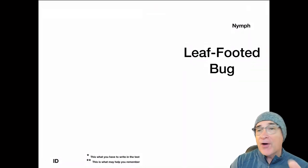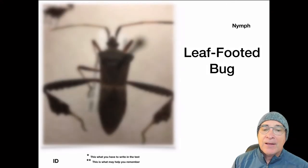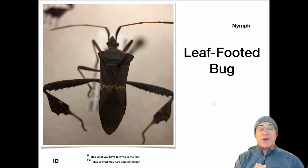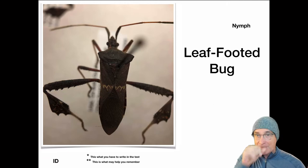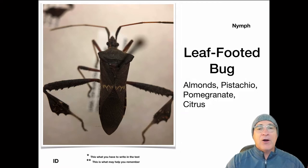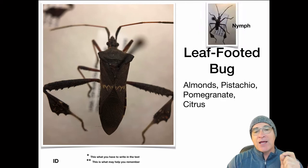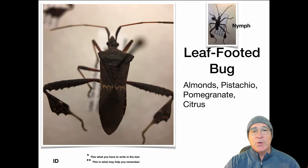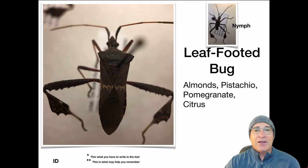This last one — if you can't figure out why it's called the leaf-footed bug, you need to look more carefully. This bug is really slender, kind of dressed up. If you look at the back end of his back legs, they look like leaves — they resemble leaves for camouflage in the environment. Their hosts are almonds, pistachios, pomegranate, and citrus. Here in Northern California, almonds, pistachios, and pomegranates are their main hosts. The nymph just looks like a miniature version — it hasn't grown into its uniform quite yet.